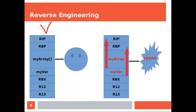On the left we have a fully working program — no problem, no stack overflow at all. Here we have a problem: the array is overrunning the boundaries, and the same is true for this variable. This array is actually overwriting the RBP and might also be overwriting the RIP. This problem is less severe than the next one.